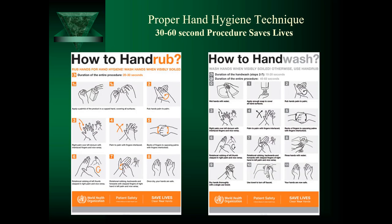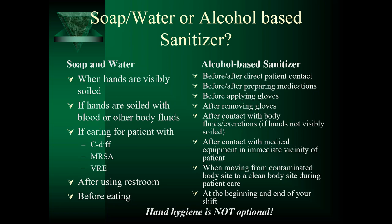Most healthcare-associated infections are preventable through good hand hygiene — cleaning the hands at the right time and in the right way. There are two most commonly used methods in healthcare settings: the hand wash and the hand rub. If the healthcare worker's hands are not visibly soiled, alcohol-based hand rubs are recommended because they save time, are easy to use, and have been demonstrated to reduce bacterial count. Soap and water is used if the hands are visibly soiled or if caring for patients with C. diff, MRSA, or VRE, and any time after using the restroom or before eating.